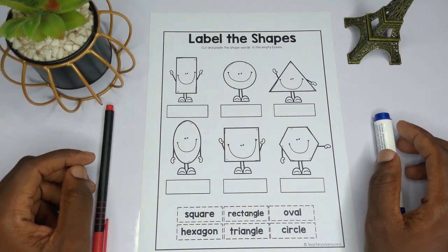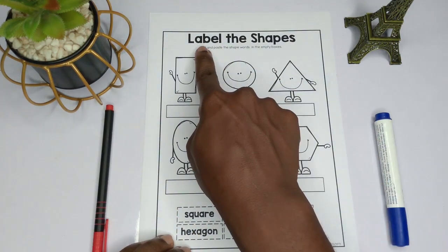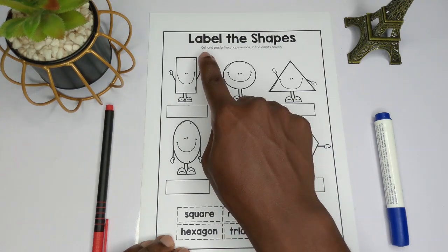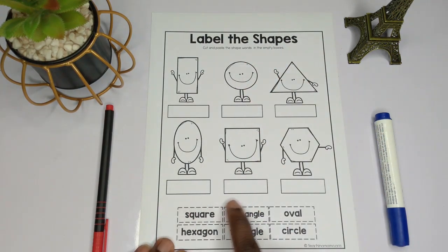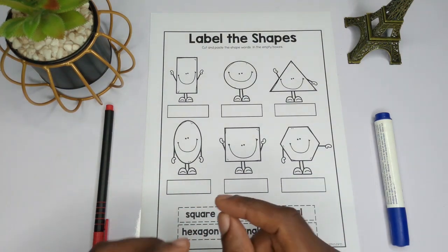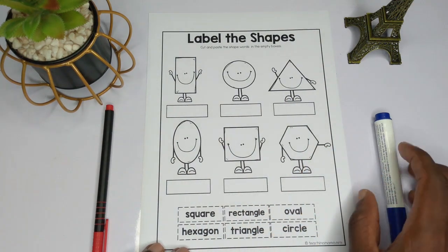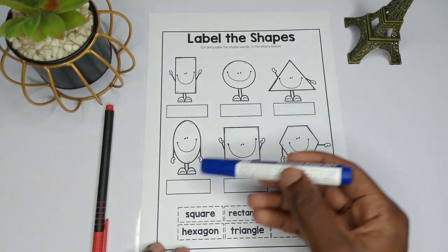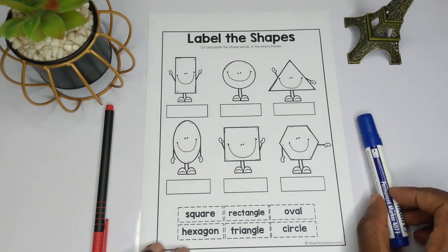Hello and welcome to my science tutorial for kids. In today's video we want to learn how to label the shapes. Ideally we are supposed to cut and paste the shape words in the empty boxes, but not to waste paper I will be writing the names of the shapes in the empty box so that you know what each of these shapes are called.